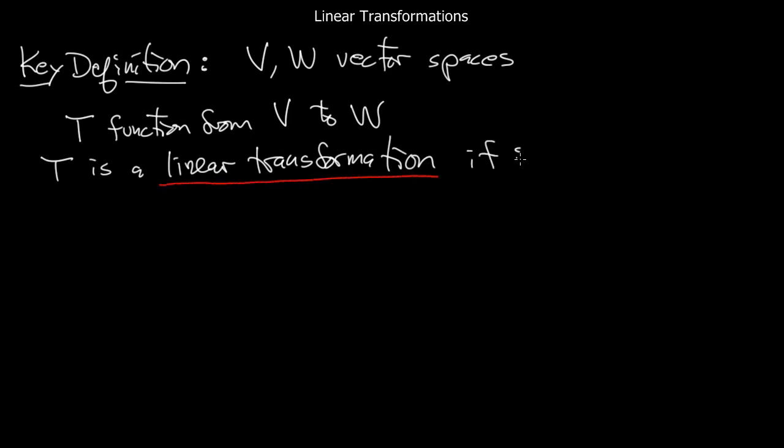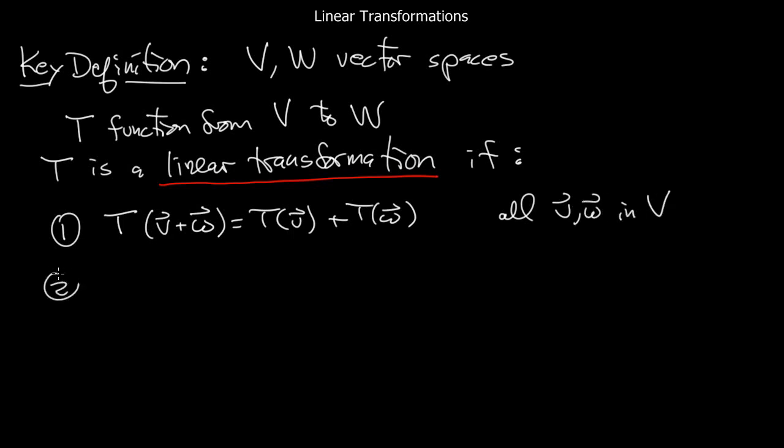This function is said to be a linear transformation if it satisfies those two properties we saw in the previous slide. T of V plus W is TV plus TW for all V and W in V. And secondly, T of CV is equal to C times T of V, for all V and for all scalars C. And so this statement is just a translation of the previous statement. It makes sense in the setting of an abstract vector space, and it's just a copy of the corresponding facts about matrices.